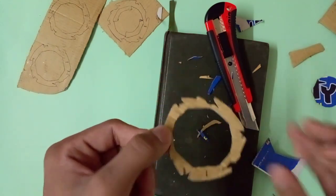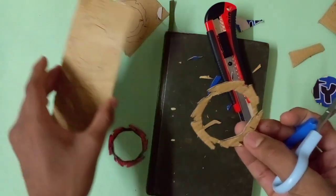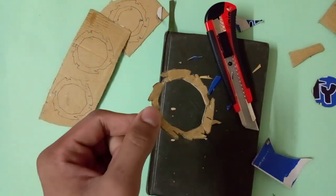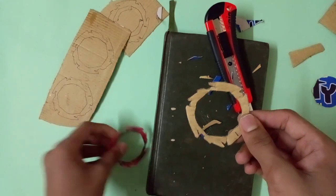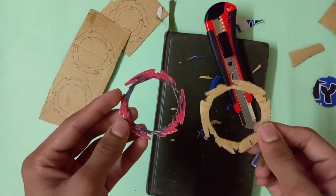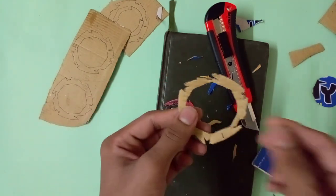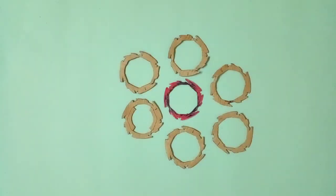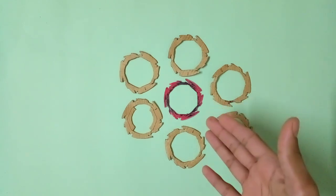So guys, now as you can see, now simply cut the other templates by using the same process. And it's looking very similar to the real devil template as you can see. Now let me show you after doing that. So guys, now as you can see, I had cut all the templates, similarly like that devil ring template as you can see in the video. And now it's time to make the devil ring.